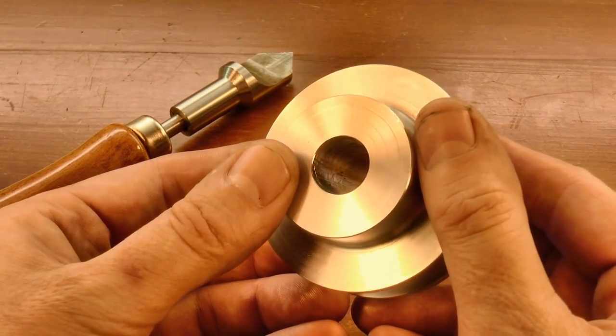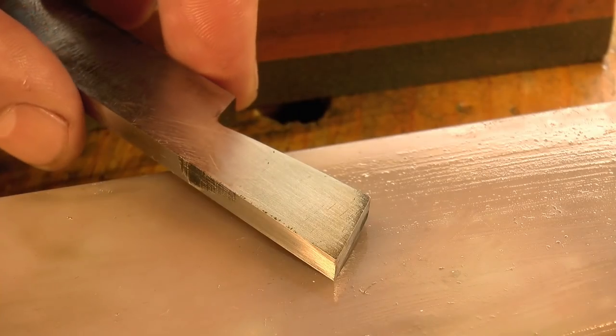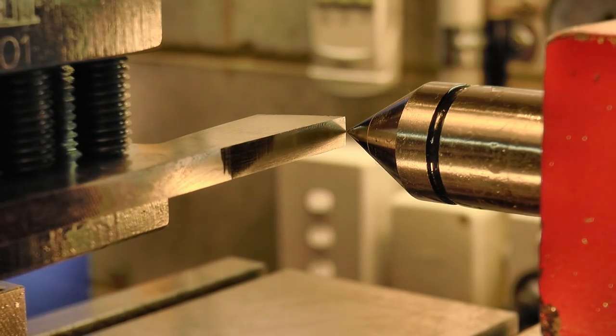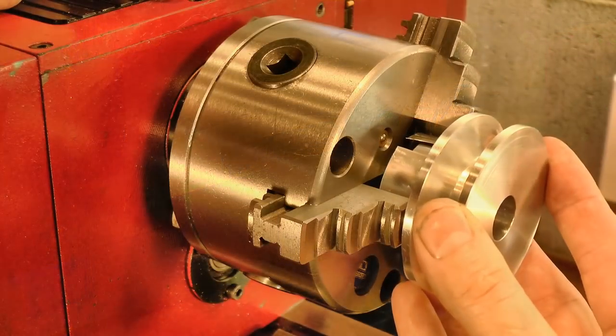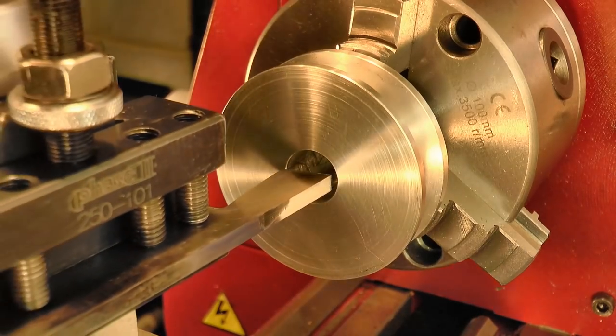So with the profile complete, it's time to sort out the keyway. Now I made this cutter specifically for the job in a separate video, so click on the link if you'd like to see that. Once it was complete, I set the cutter on center, loaded the pulley in the chuck, and then I took the first cut to form the keyway.